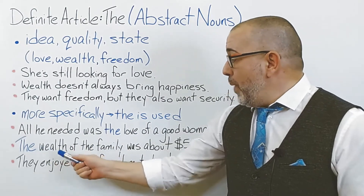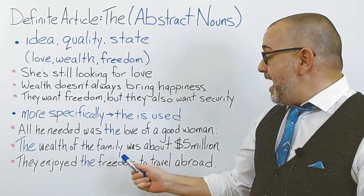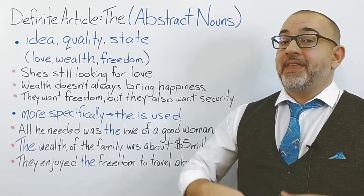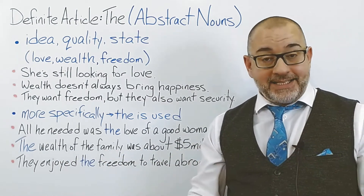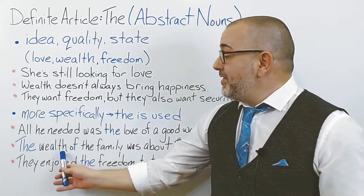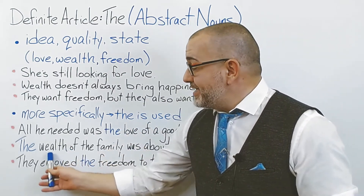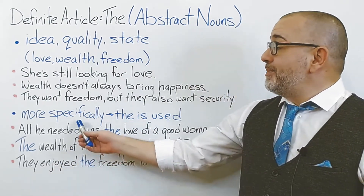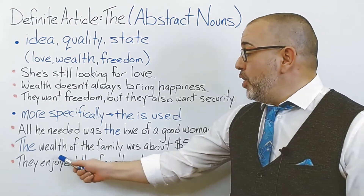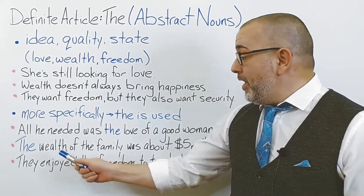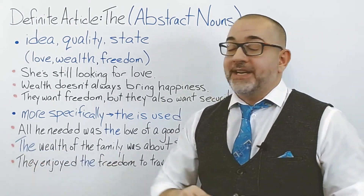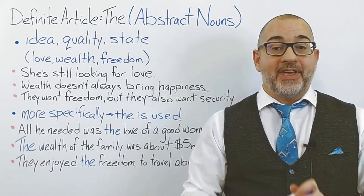The wealth of the family was about five million dollars. In this situation, we know the abstract noun wealth has been used more specifically. We know that it is the wealth of the family, so we use the definite article, 'the.'